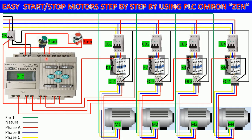I use I0 for start and I1 for stop. This is a stop button. When we press the start button, the motors will run step by step — motor one will start, motor two will start, motor three will start, and after that motor four will start, step by step.